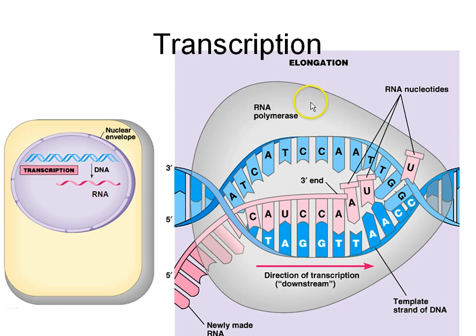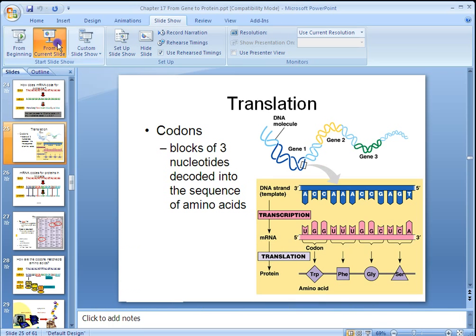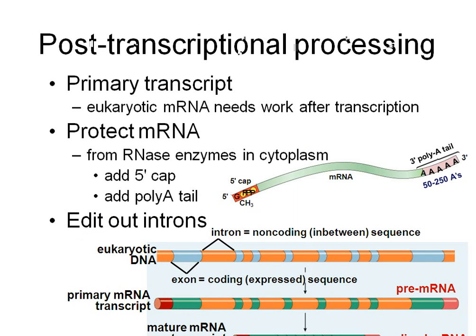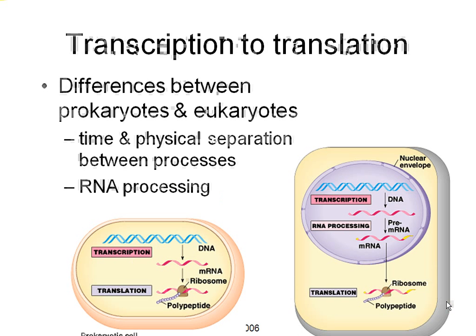Here we have transcription again: RNA polymerase, the growing messenger RNA, and the two sides of DNA. Remember, transcription happens in the nucleus. During RNA processing, we remove introns — you can see how the introns get cut out — and we add a 5' cap and a poly-A tail to protect from enzymes. Remember, in bacteria there is no nucleus, so they can do transcription and translation at the same time.